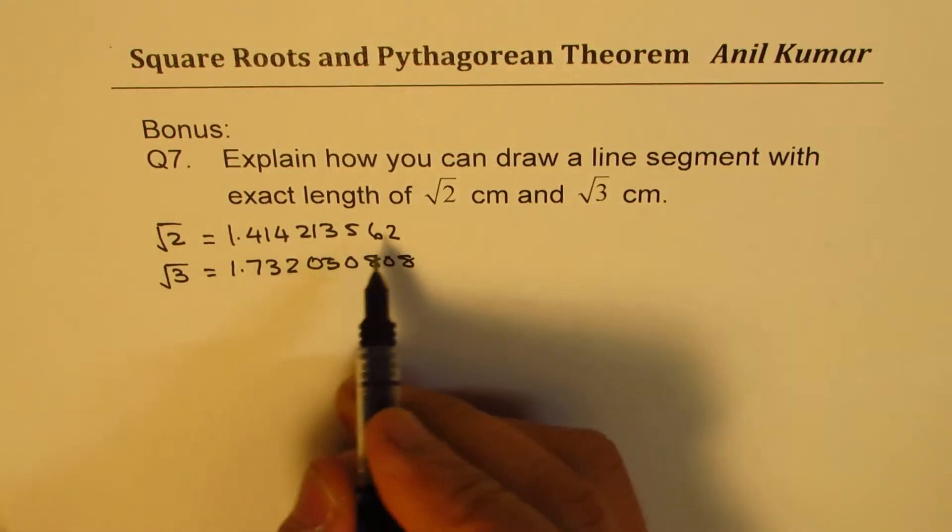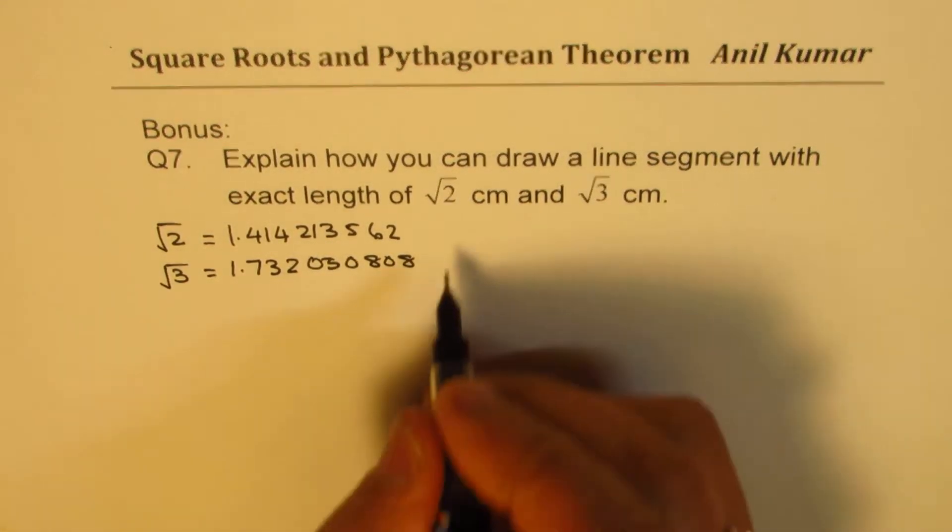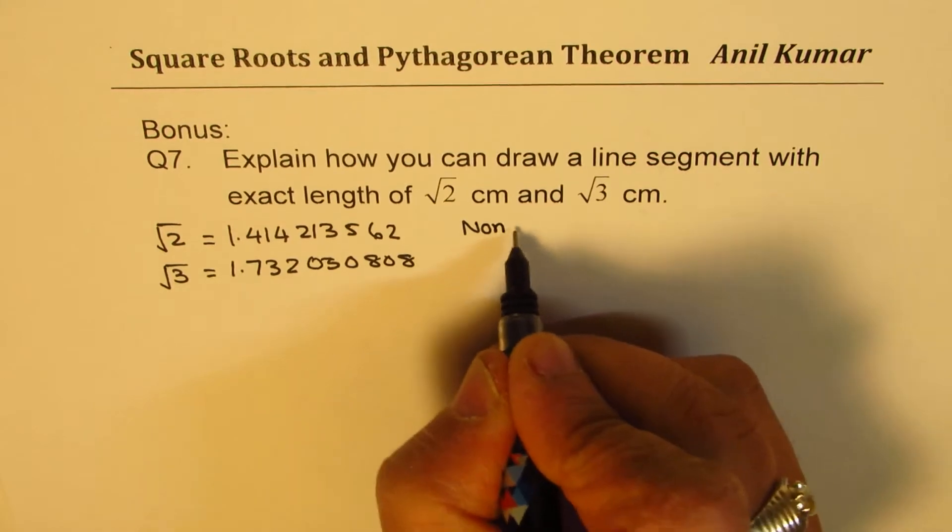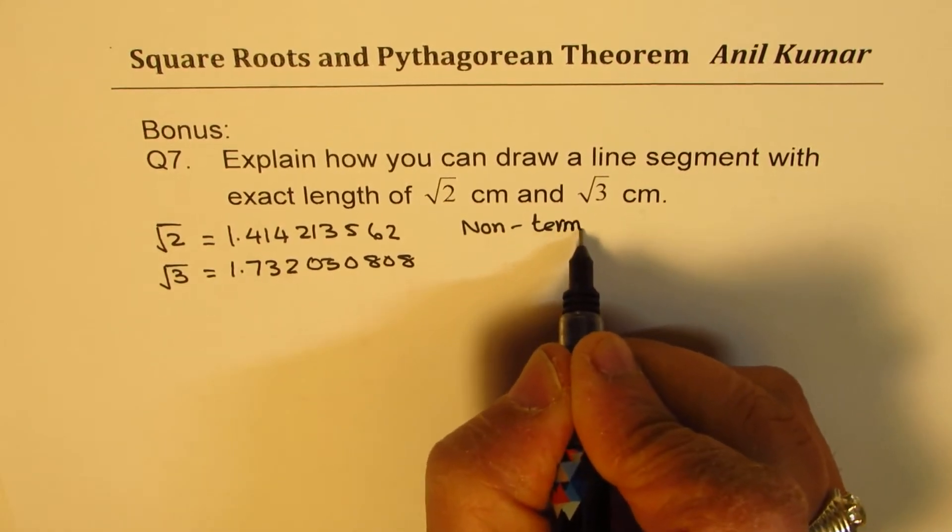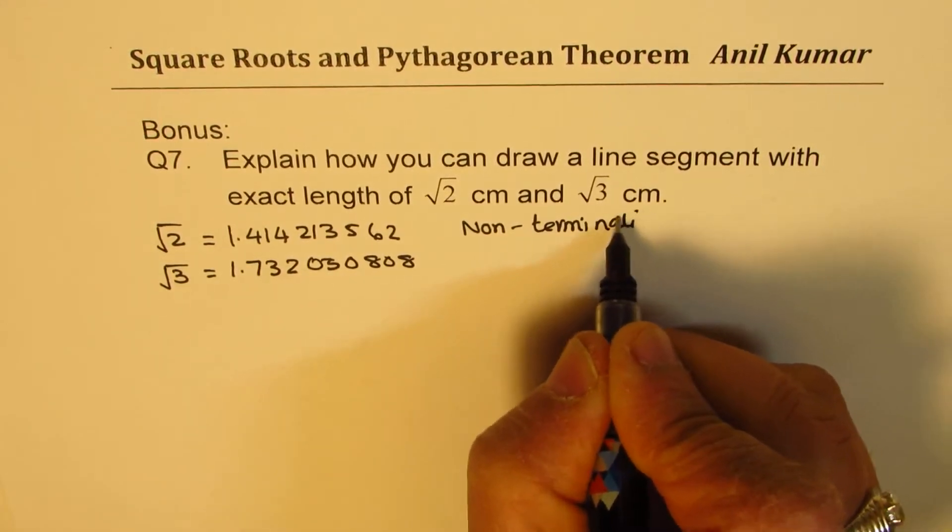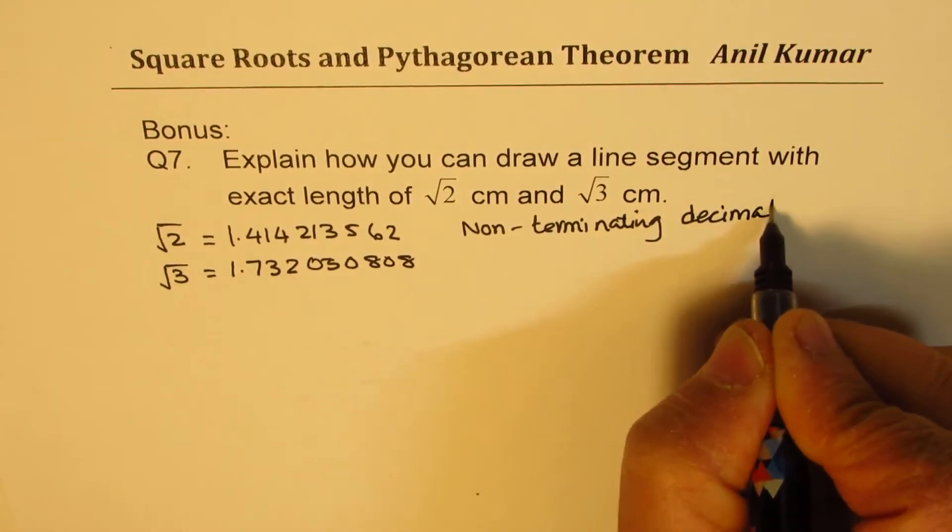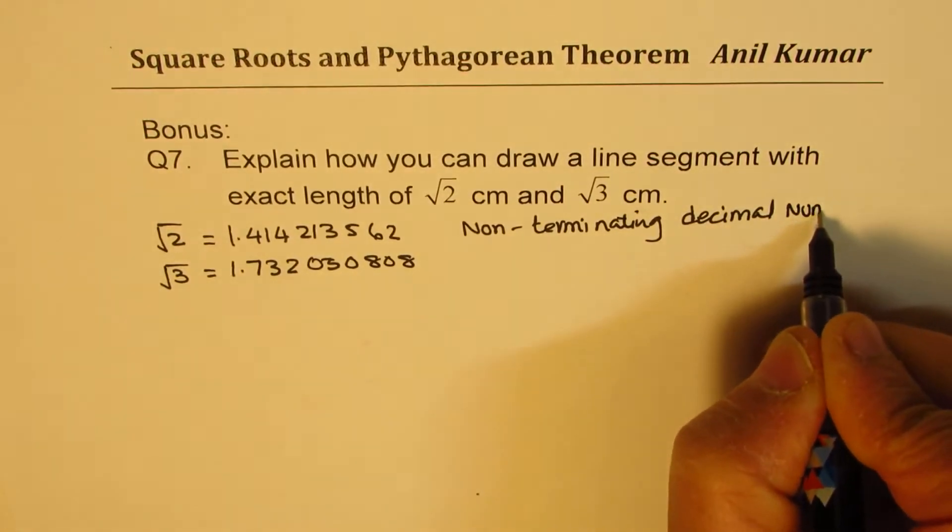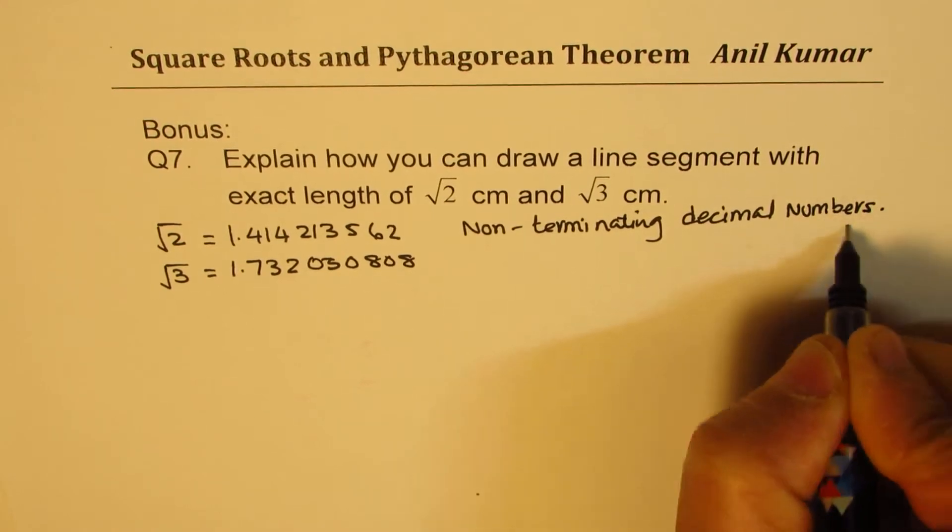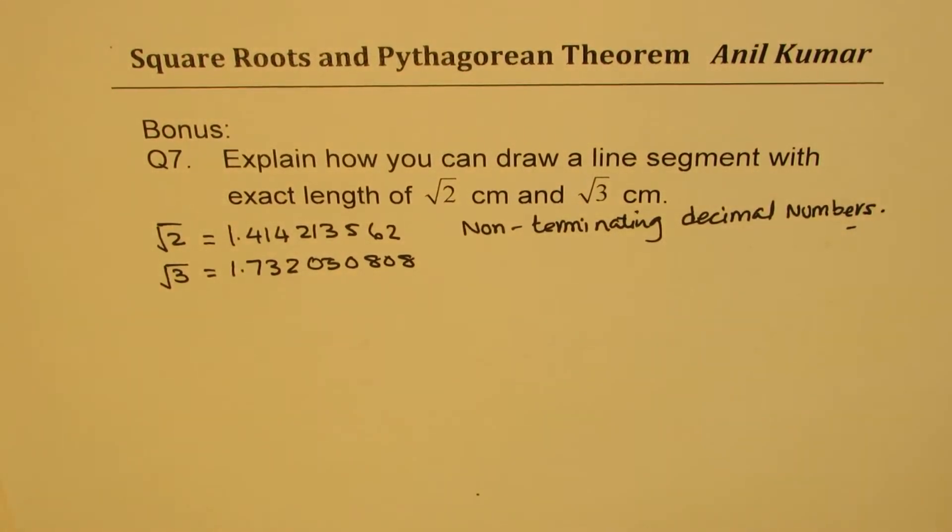So these are non-terminating decimal numbers. And therefore, we cannot exactly measure them. That's the whole idea.